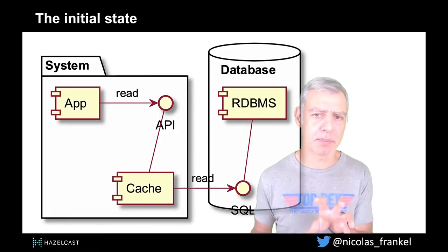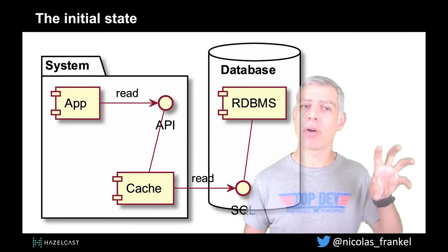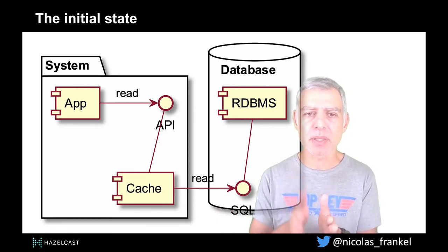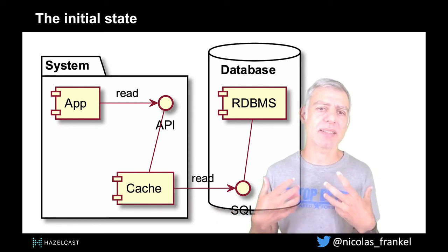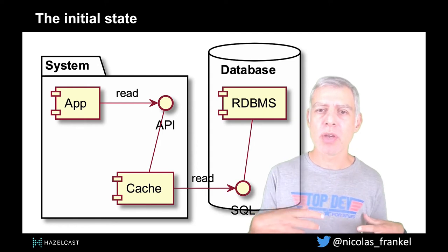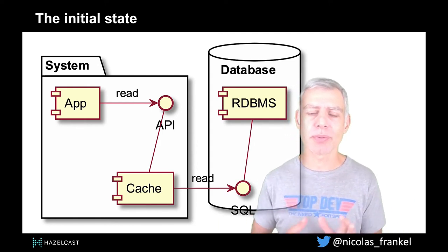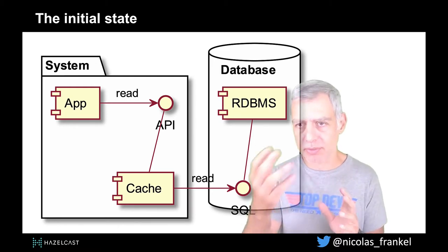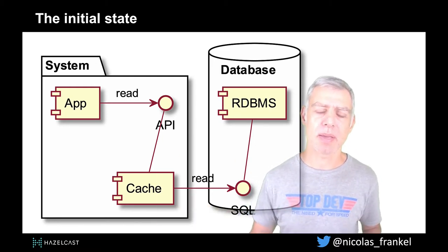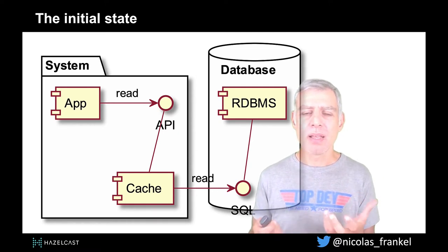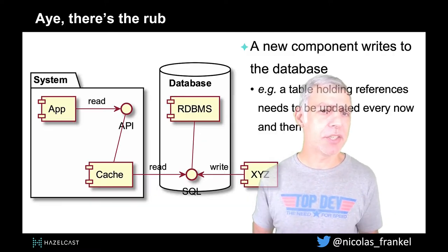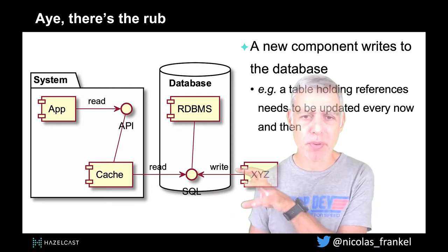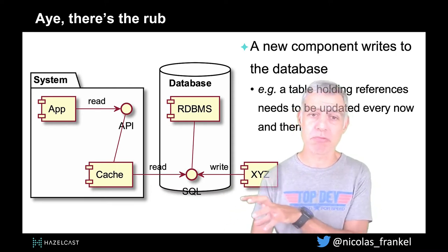Let's keep our example simple. Here we have only a single application and a database, and in between we have a cache that acts as a facade. Every time we do an operation, either read or write, we go through the cache. We read from the cache. When we write, we write to the cache and the cache writes to the database. That's the ideal. In general, the ideal is not there because you have a third-party component that writes to the database.